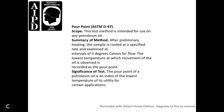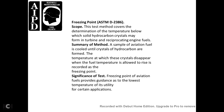Pour Point — ASTM D97. Scope: intended for use with petroleum oils. Summary: after preliminary heating, the sample is cooled at a specified rate and examined at intervals of three degrees Celsius for flow. The lowest temperature at which movement of the oil is observed is recorded as the pour point. Significance: pour point is used as an index for the lowest temperature at which a petroleum oil is useful for certain applications.